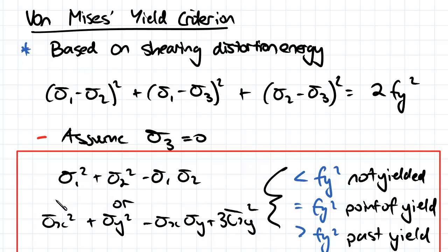We can also write this equation in terms of our usual stress components. So sigma x, sigma y and tau xy. So you can deal with it in principal stresses or you can deal with it in the usual stress components.